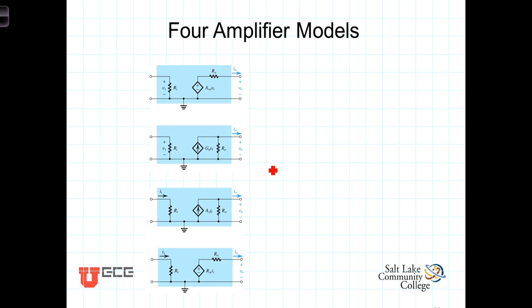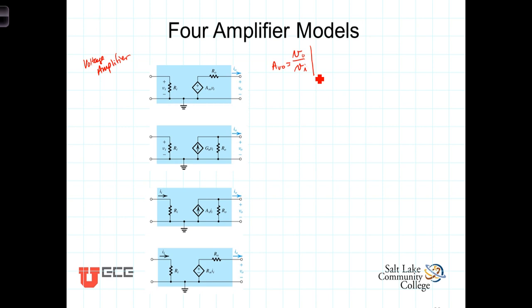The first of these four models is known as a voltage amplifier. In each of these models there is an unloaded gain term. For the voltage amplifier, this gain term AV0 is defined as the ratio of the output voltage to the input voltage, evaluated with Iout equaling 0. In other words, with no load connected — a voltage source means open circuit — and we refer to AV0 as the open circuit voltage gain.